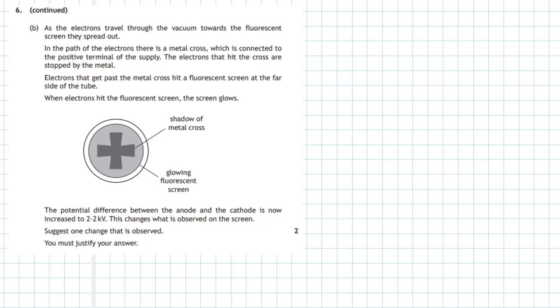If the potential difference between the anode and cathode is now increased to 2.2 kilovolts, what changes will be observed on the screen? Well if you increase the potential difference you're going to increase the work done on the electrons.